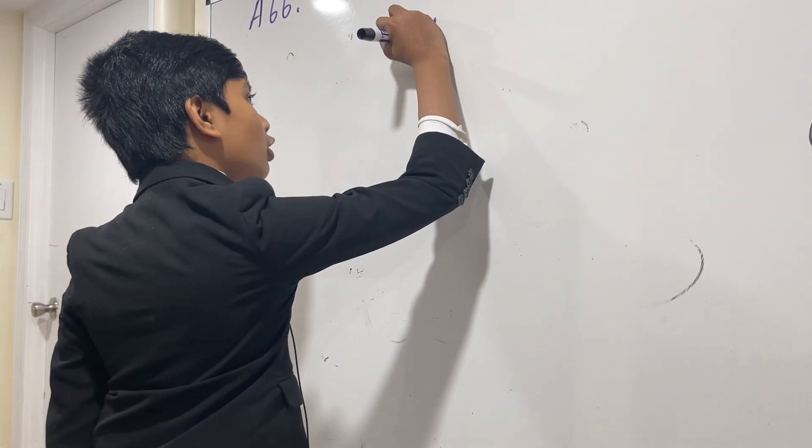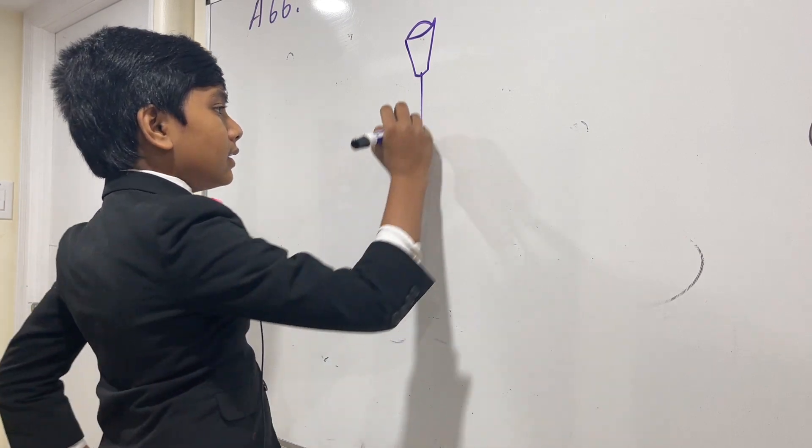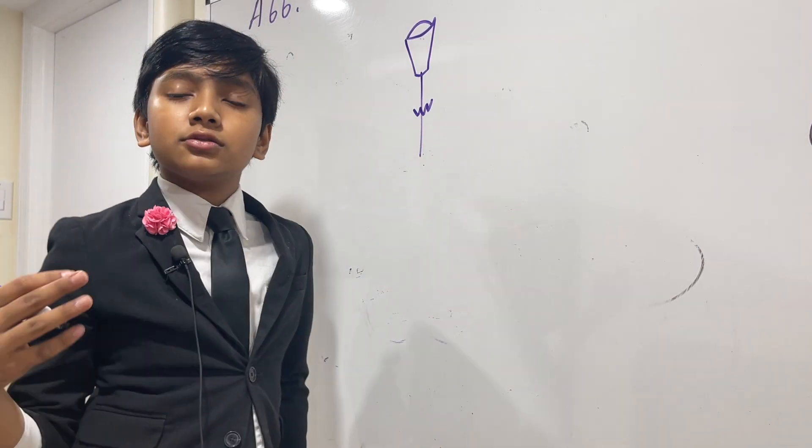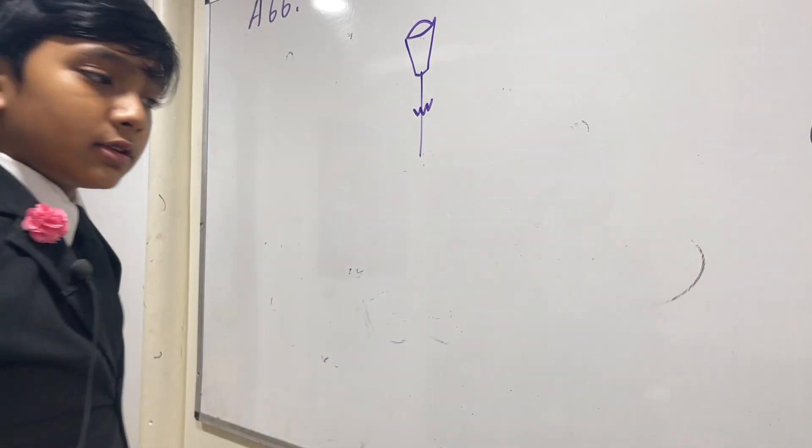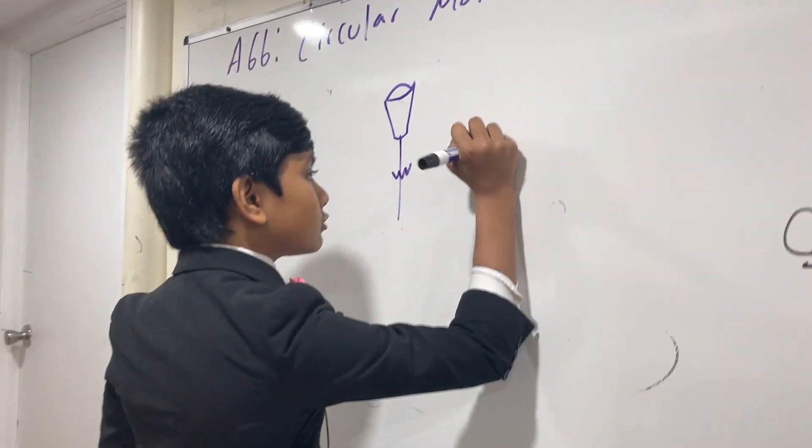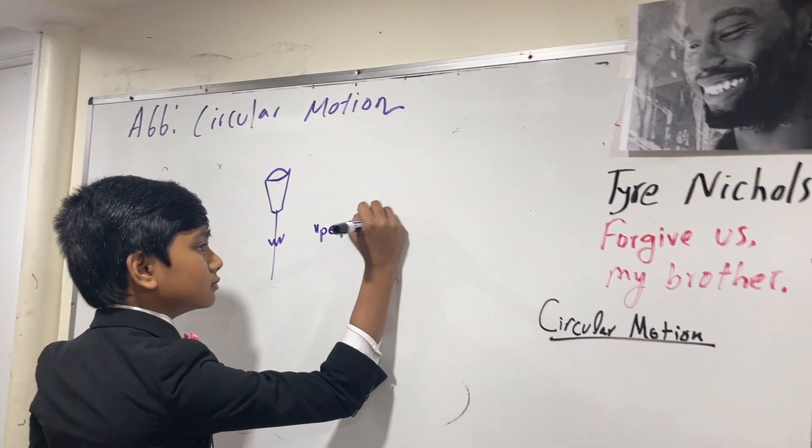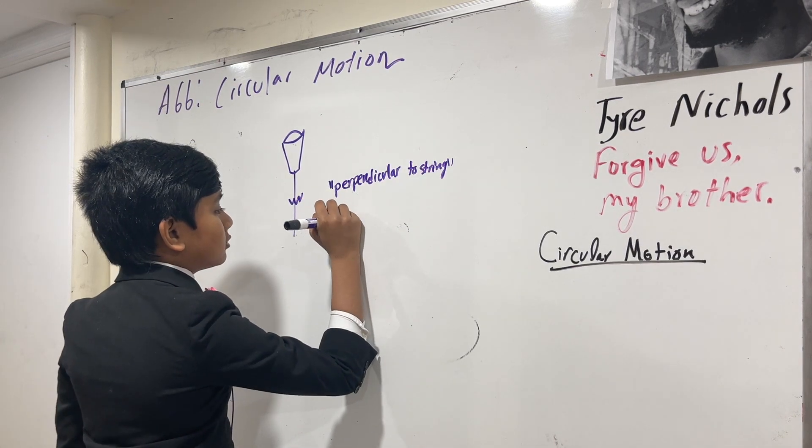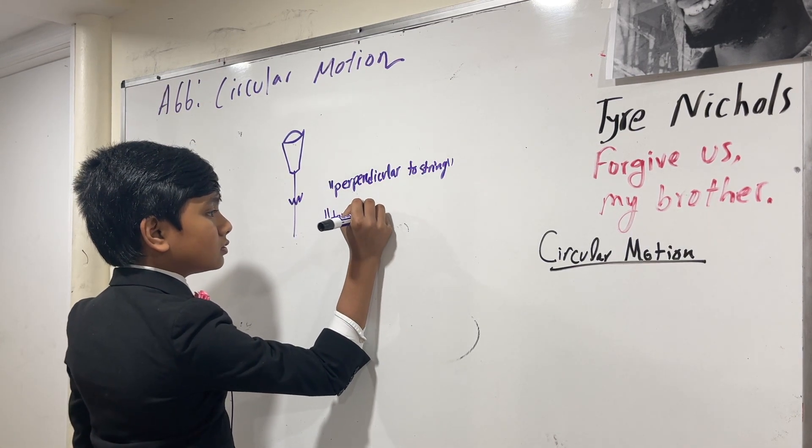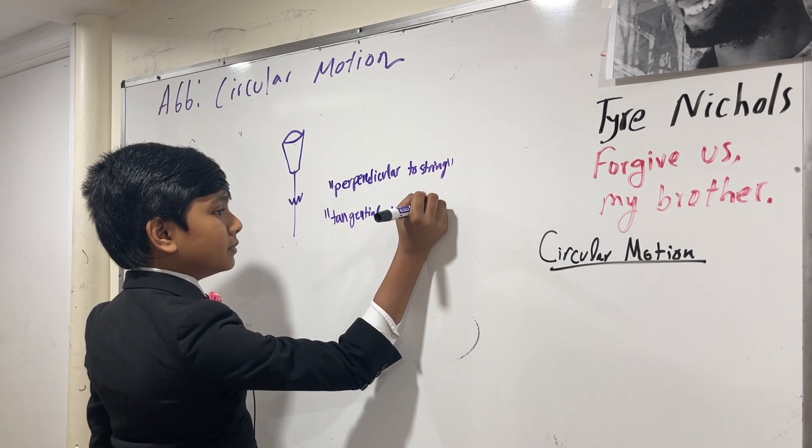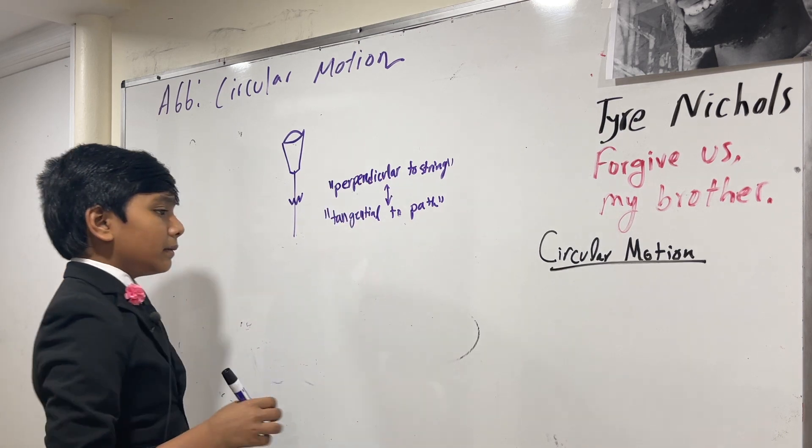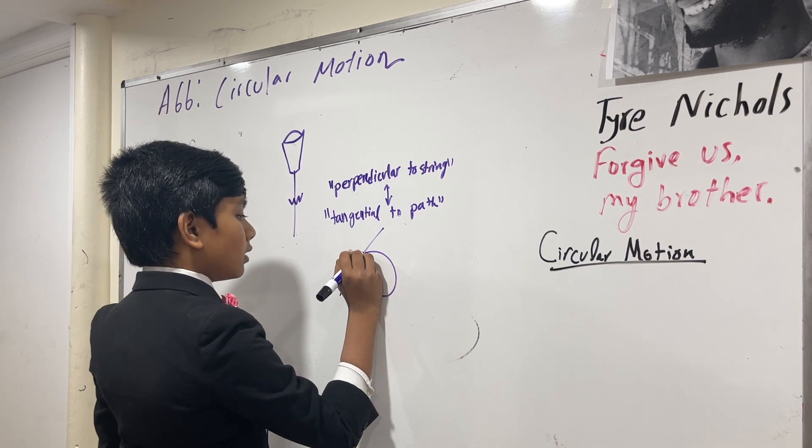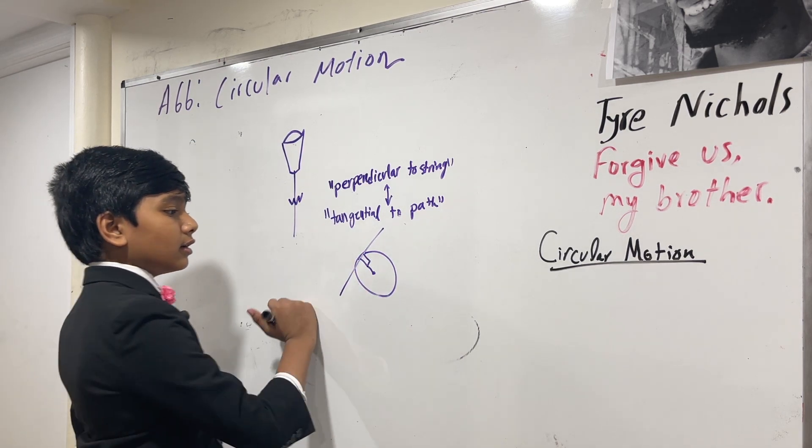If the rope that was attached to the bucket just broke, then which direction would the bucket fly off in? This is just general. We're just trying to get a general definition here. The correct answer to this question is perpendicular to the string. Or you could also say, tangential to the path. These two mean the same thing. Because if you ever have a tangent on the circle, it will be perpendicular to one radius.